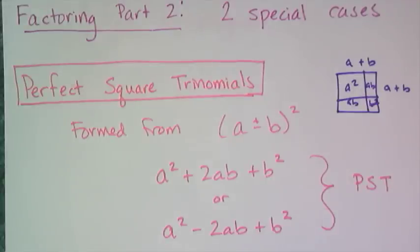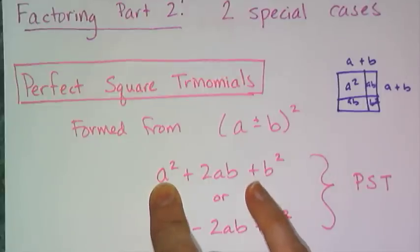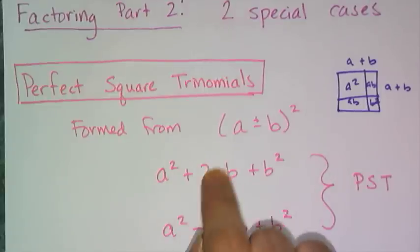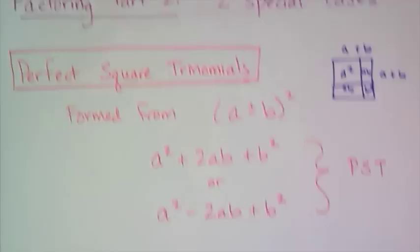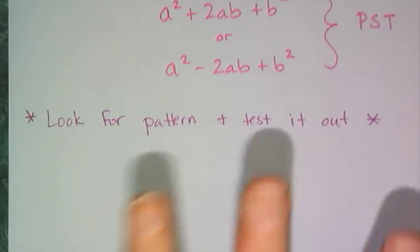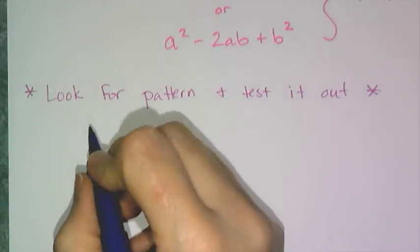When asked to factor these, look for the patterns of a perfect square trinomial: perfect squares on either end, and twice the square root of those perfect squares multiplied together in the middle. Look for candidate perfect square trinomials, then verify if it actually is one. If so, the factoring is super easy. If not, you'll need to find another way to factor it, if it's factorable at all.